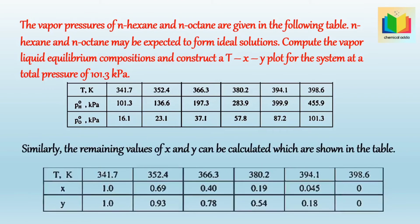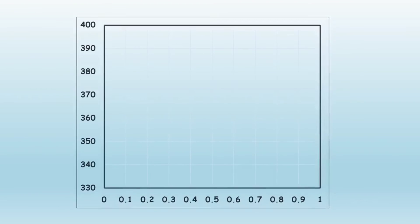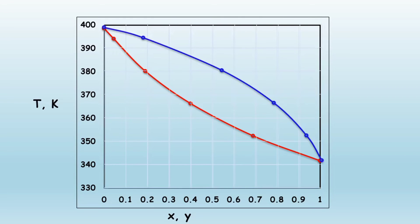Now using this data we can construct T-X-Y plot. For that, on the X axis we take X and Y values, and on the Y axis we can take the temperature. Now let's draw T versus X curve and T versus Y curve using the point from the table.